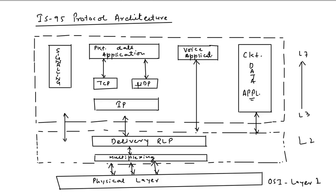Layer 2 is called the MAC sublayer and takes care of channel management. RLP — Radio Link Protocol — handles channel management, and Automatic Repeat Request (ARQ) is generated using this protocol. It is used for cellular interface, and multiplexing is also done in Layer 2. In the upper layers, from Layer 3 to Layer 7, there are signaling, packet data application, voice application, and circuit data application components.